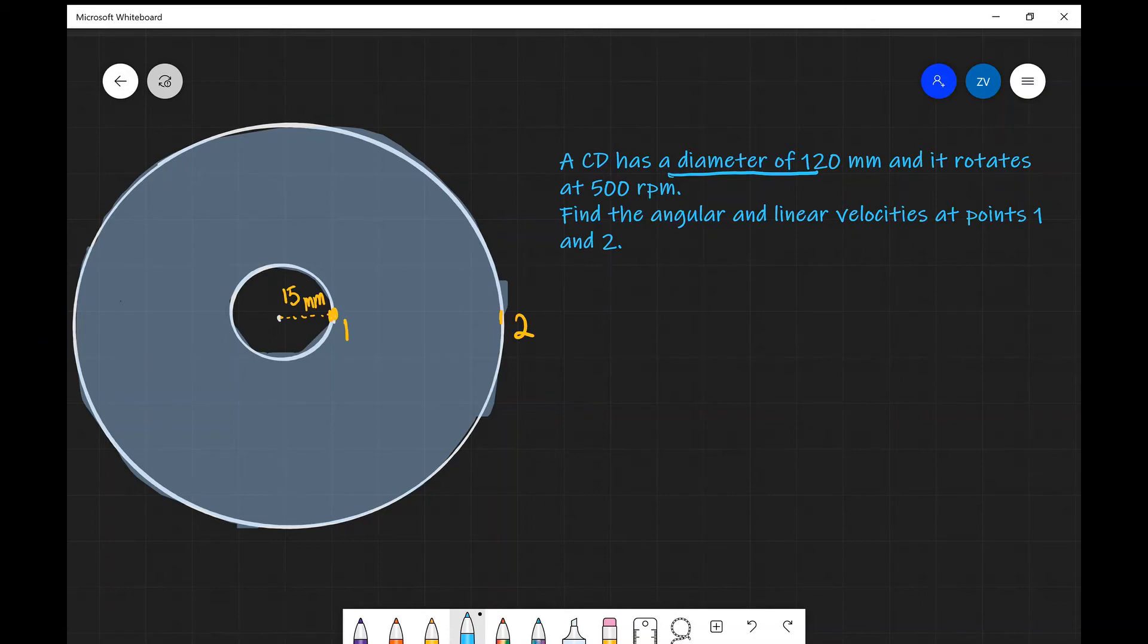Now let's have a look at the solution. First of all, the angular velocities at both of these points will have to be the same. We don't have a part of the CD suddenly overtaking another point. So both point 1 and point 2, let's say that they move at a small distance in time, they're gonna have to have traveled by the same angular displacement.